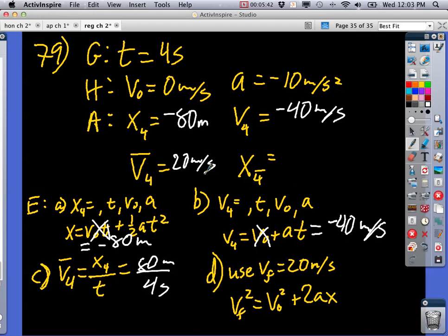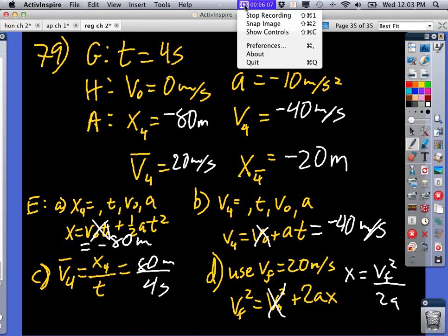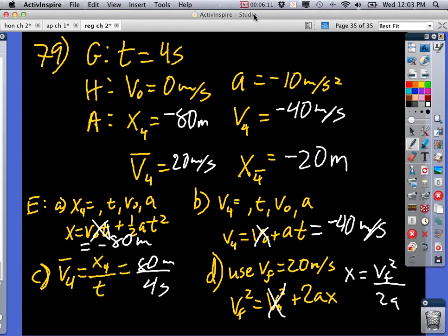And then this, I use 20 meters per second as my final velocity because it's saying, how far did you fall before you got to 20 meters per second? So then if I solve this for X with V zero being zero, I get X equals VF squared over 2A. That's 20 squared, which is 400 over 2A, which is negative 20. So that becomes negative 20 meters. Okay, question over here.